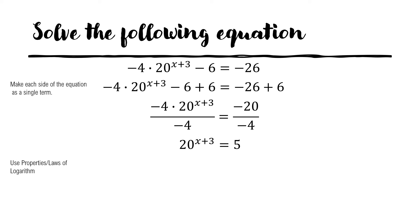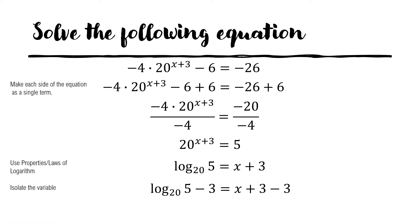We can now proceed to the next step using the properties or laws of logarithm. We transform this exponential equation into a logarithmic equation: logarithm of 5 with base 20 equals x plus 3. We then isolate the variable by subtracting both sides by 3, giving us x equals log base 20 of 5 minus 3, which is approximately equal to negative 2.46.